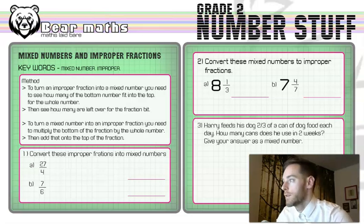An improper fraction is a fraction that has a number that is on the top that's bigger than the number on the bottom. Some people call them top heavy fractions.